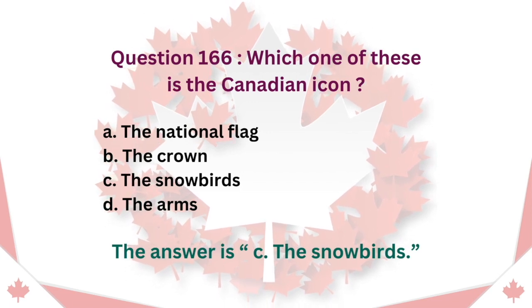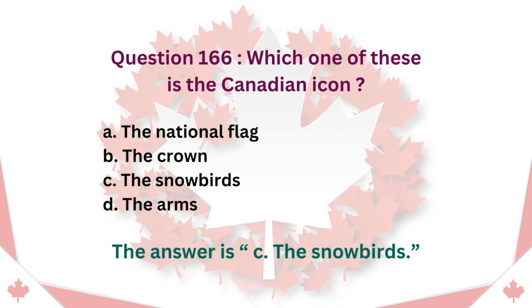Question 166: Which one of these is the Canadian icon? A. The national flag. B. The crown. C. The Snowbirds. D. The arms. The answer is C. The Snowbirds.